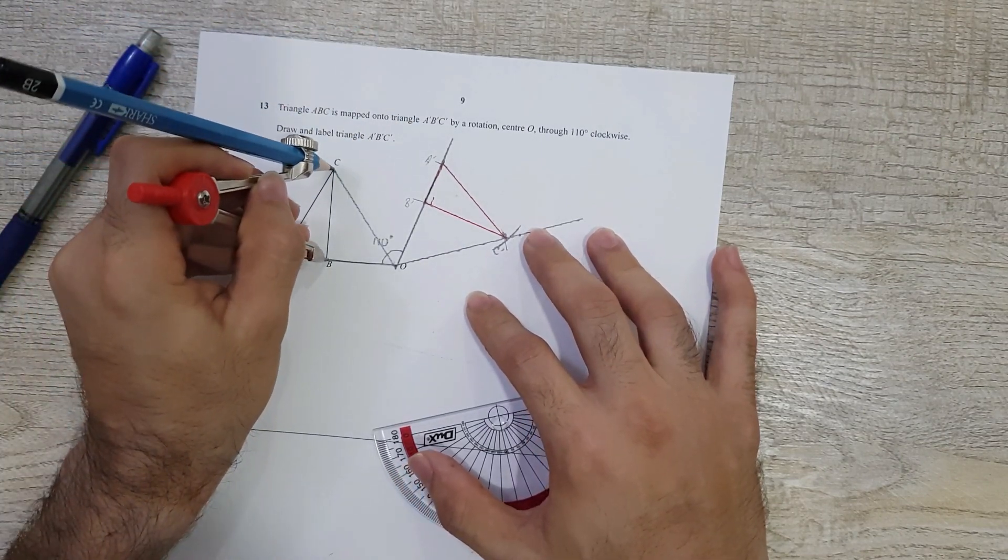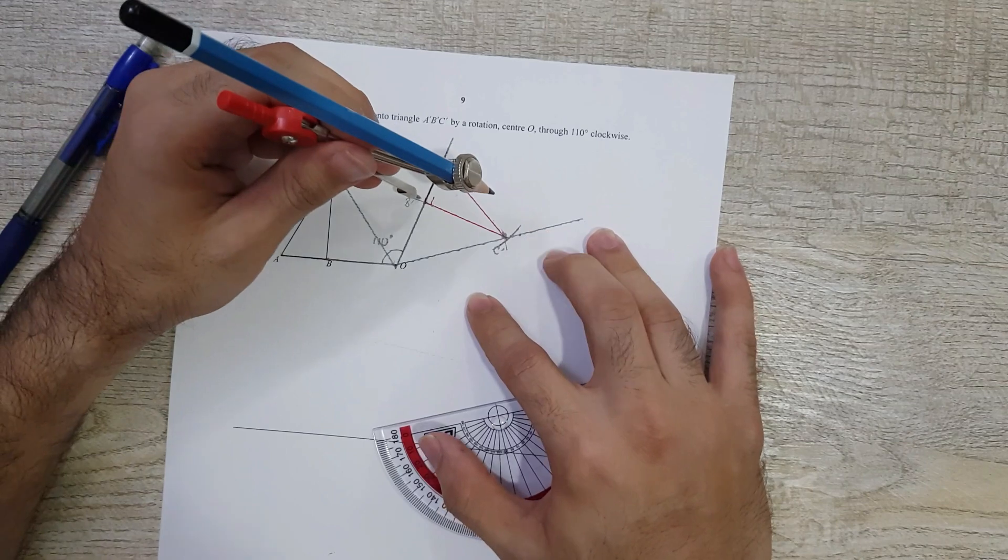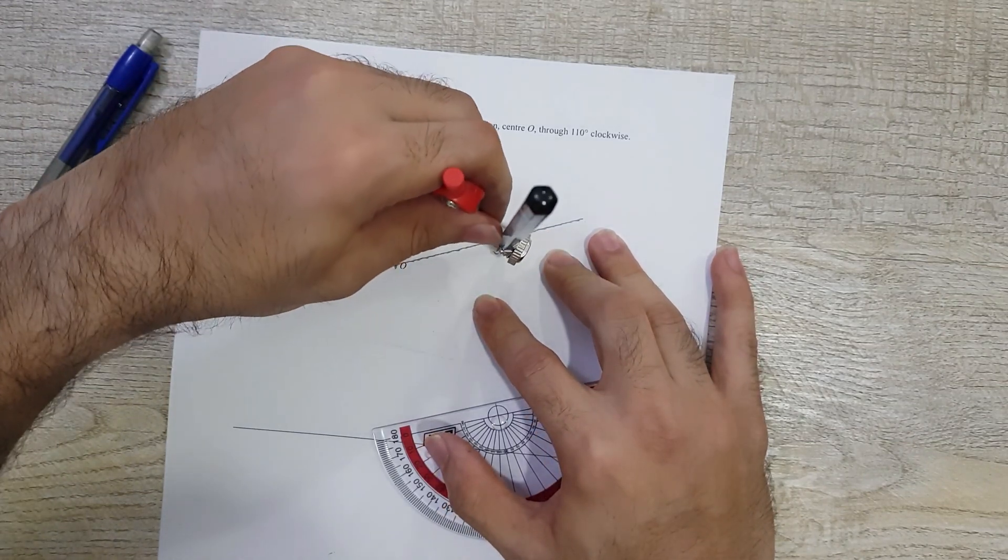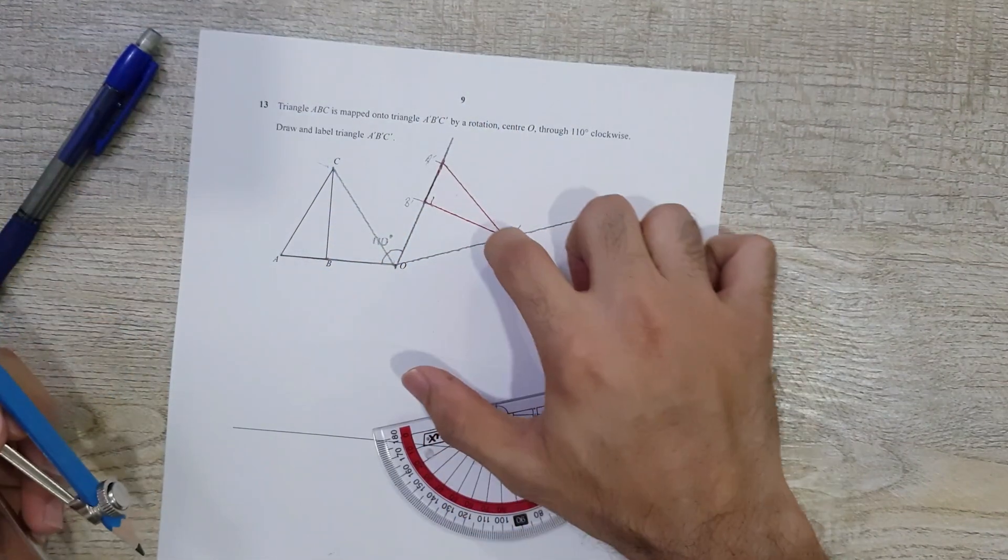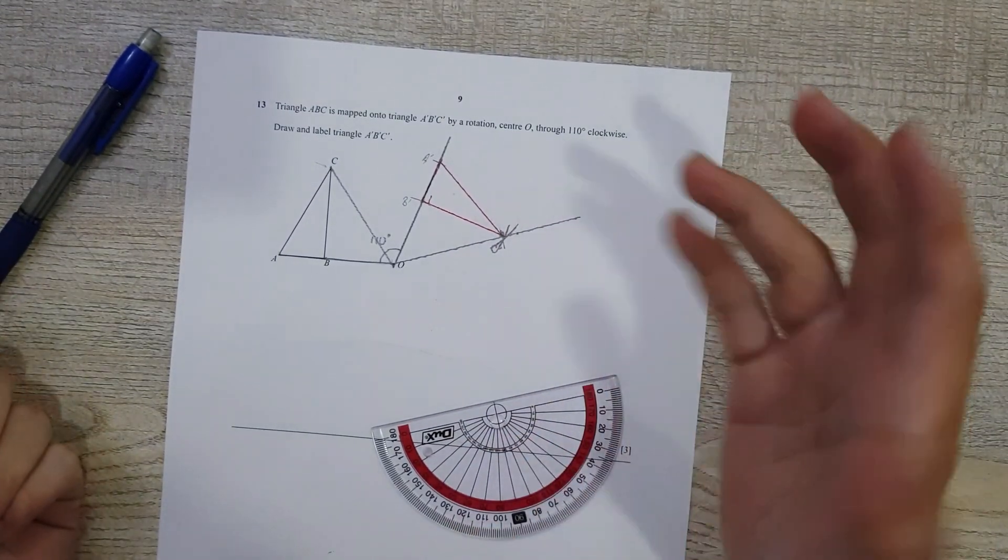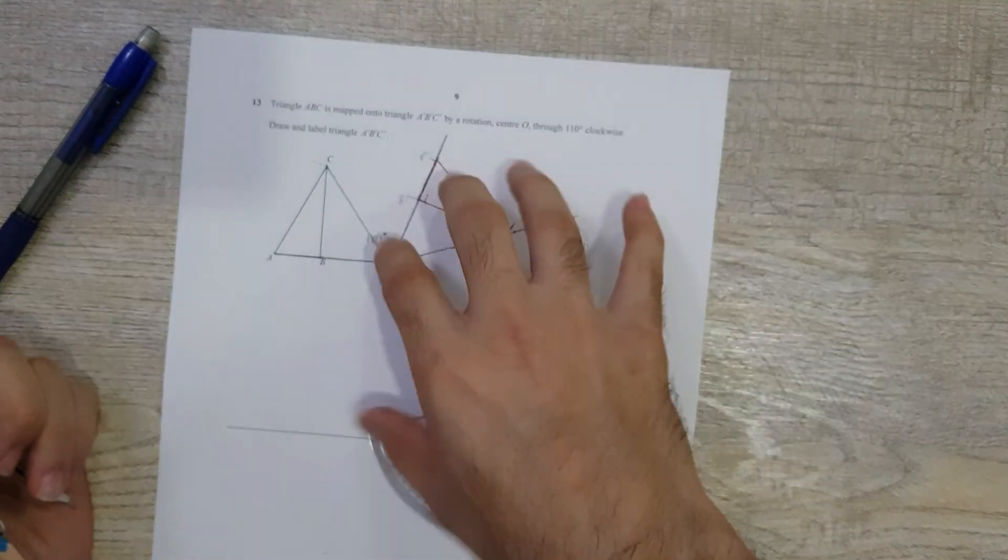Then what you can do is measure the distance of B to C with the help of a compass, then place your compass at B' and make an arc, and the two points where they meet is where point C is going to be. Again, that's up to you. This is something that I really like, so I thought I'd share it with you guys.